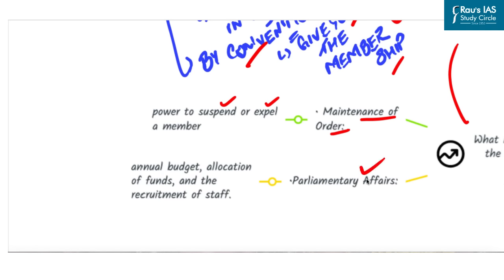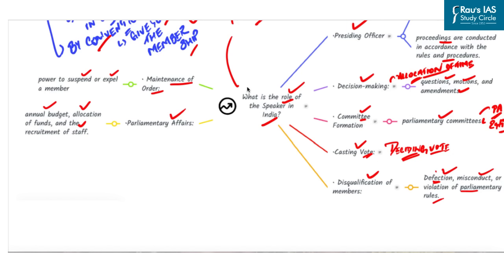Next is role with respect to parliamentary affairs. Speaker is responsible for the administration of the Lok Sabha or State Legislative Assembly, including the preparation of the annual budget, allocation of funds, recruitment of staff. Here we can see, Speaker of the Lok Sabha or State Legislative Assembly plays a crucial role in ensuring the smooth functioning of the Parliament or State and maintaining the integrity of the democratic process in India.